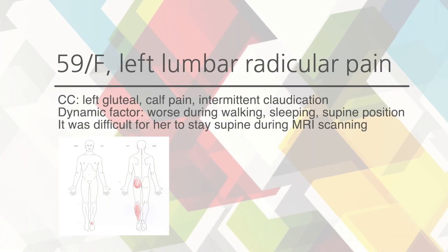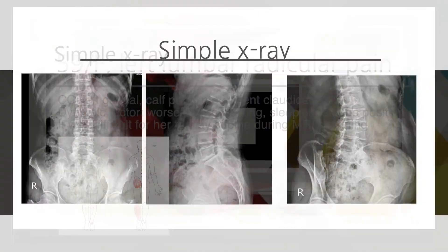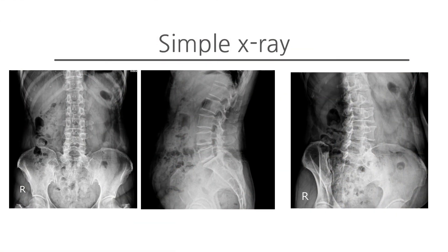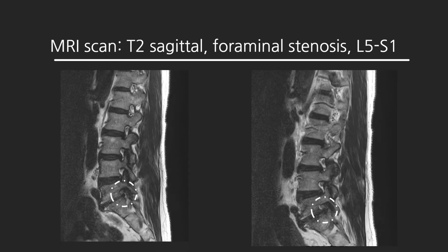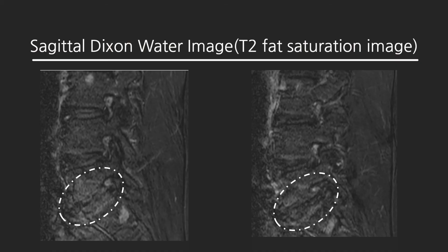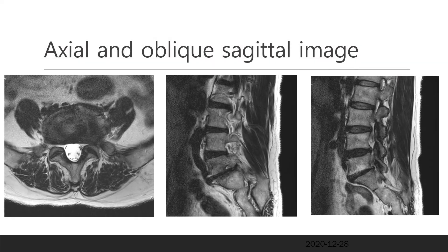Let's go to the practice. She has left lumbar radicular pain. She had to bear severe pain during the MRI scan because the spine position worsened her pain. Her simple X-ray tells disc narrowing at L5-S1. The oblique image makes me anticipate a complicated procedure because the high iliac crest obscures the safe triangle and creates a narrow window. T2-weighted image shows foraminal stenosis at left L5-S1. Fat saturation image shows high signal intensity of the endplate and disc space at L5-S1. Axial image shows left lateral protrusion of a black disc. The oblique sagittal image shows L5 dorsal root ganglion swelling and foraminal stenosis.